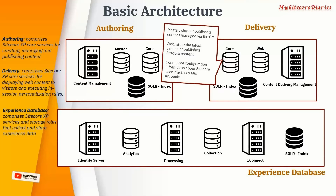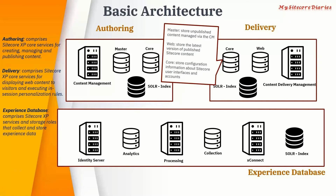The web database contains the live data, that is the published data that is getting displayed to the user, and it is connected to the delivery environment. Then we have the core database, which is shared between authoring and delivery — that is content management and content delivery. It stores the user interface, account, and configuration data related to the Sitecore site.